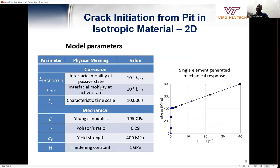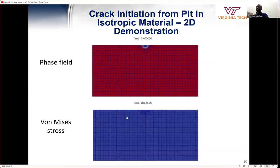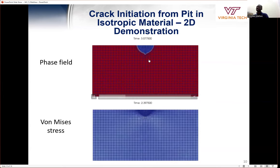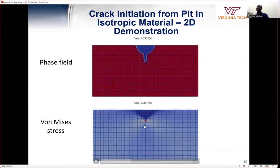We use these material parameters in the corrosion and mechanical part for the isotropic material. Then this is the evolution of the stress and the phase field variable from our simulation. So this is the adaptive mesh that we use to capture the evolution of the complex shape.